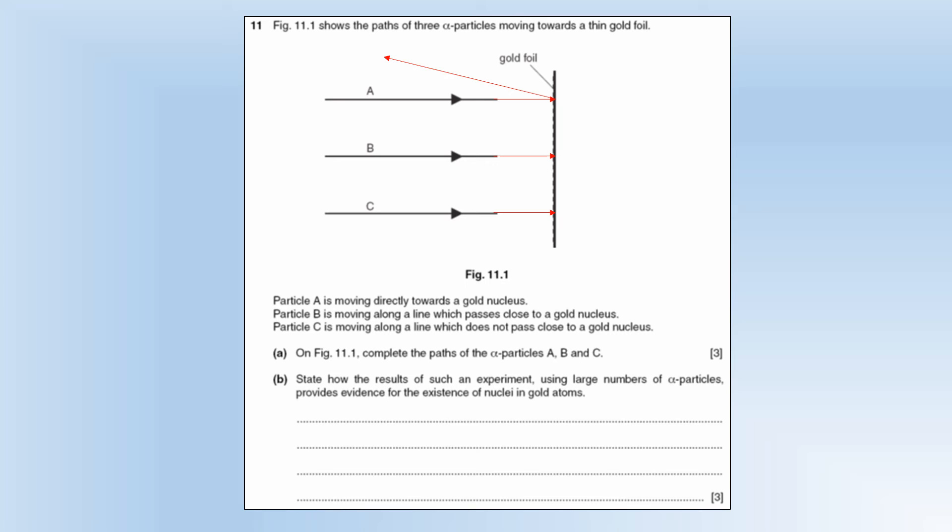B moves along a line that's close to a nucleus, so it's going to be deflected by nowhere near as much. C moves along a line which does not pass anywhere near a nucleus, where it's just going to continue basically undeflected.